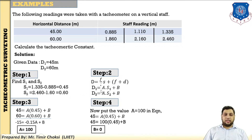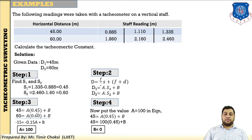The formula is D = (F/i)×S + (F + d), where F/i is the multiplying constant A and F + d is the additive constant B. Put the values of D1, D2 and S1, S2 into the formula. So: 45 = A×0.45 + B, and 60 = A×0.60 + B. Solving these equations, find the value of A equals 100. Then find the value of B.